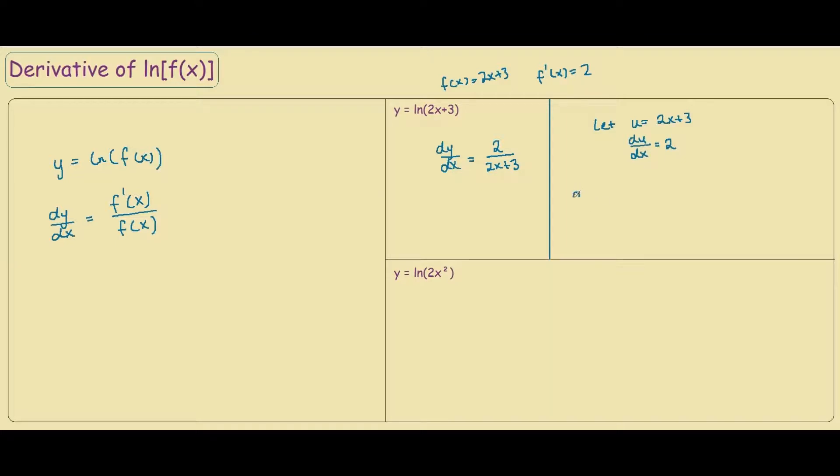And from our chain rule, we know dy/dx equals dy/du times du/dx. This is basically the same thing, because the du's cancel out, so dy/dx is equal to dy/dx on both sides.